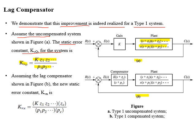Now if we assume that we have added a lag compensator whose transfer function was studied from the last slide, the new static error velocity constant KVn will be equal to gain K multiplied by the product of zeros divided by the product of poles, multiplied by the compensator zero over the compensator pole. The compensated system is shown in figure B.